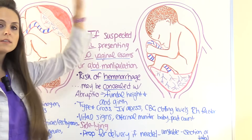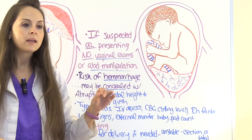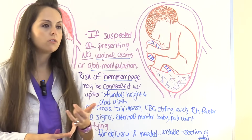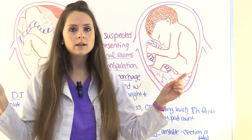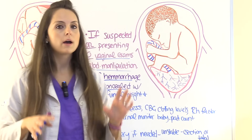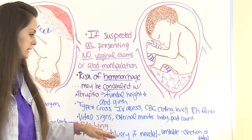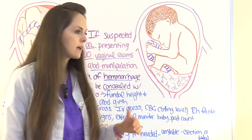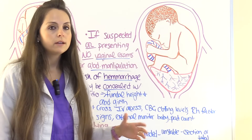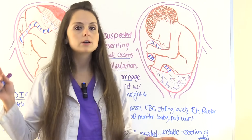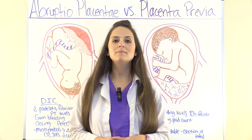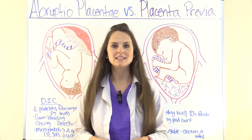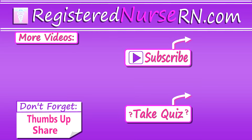Treatment for both conditions depends on how far along mom is, how severe it is, and whether it's complete or partial. Always be prepared for delivery if needed — if mom is unstable with a total previa or total abruption, an emergency C-section is likely. That wraps up this review. Thank you for watching — don't forget to take the free quiz and subscribe to the channel for more videos.